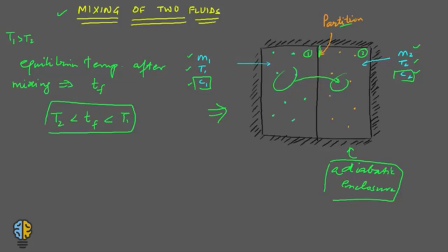For example, if t1 is 100°C and t2 is 20°C, when you mix the two fluids you get a final mixture at, say, 45°C. The final temperature also depends upon the mass of the two fluids.